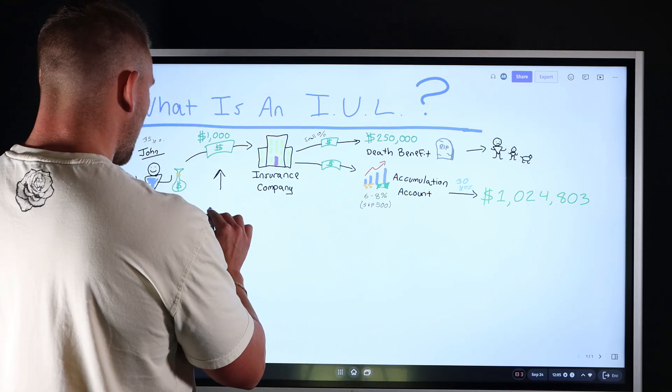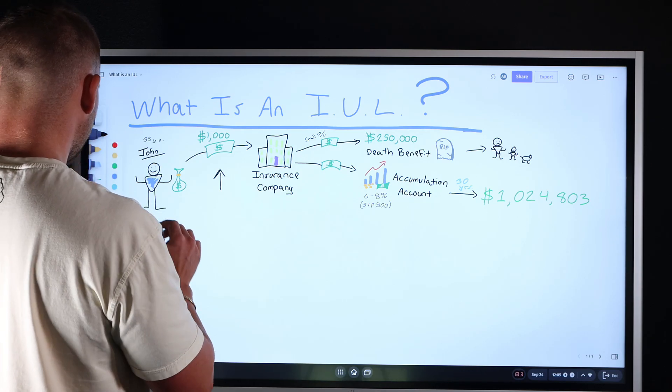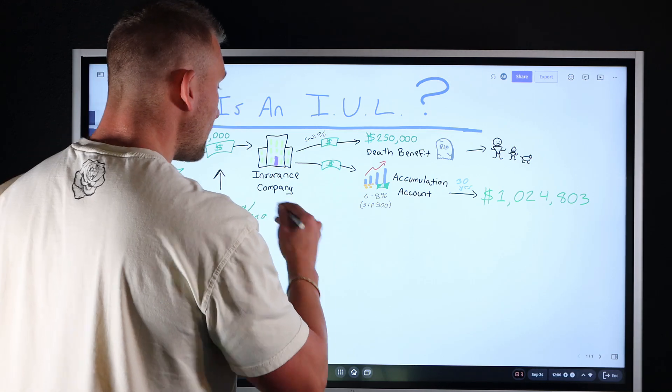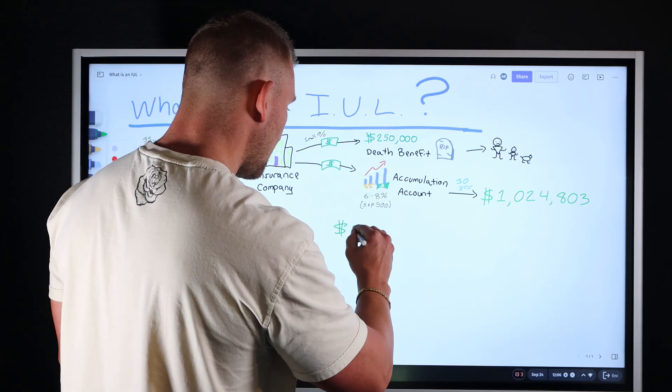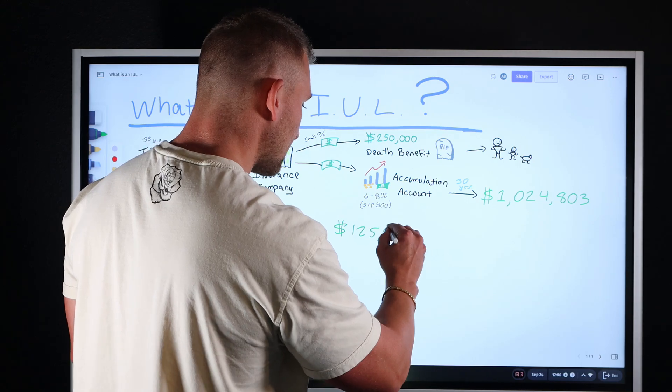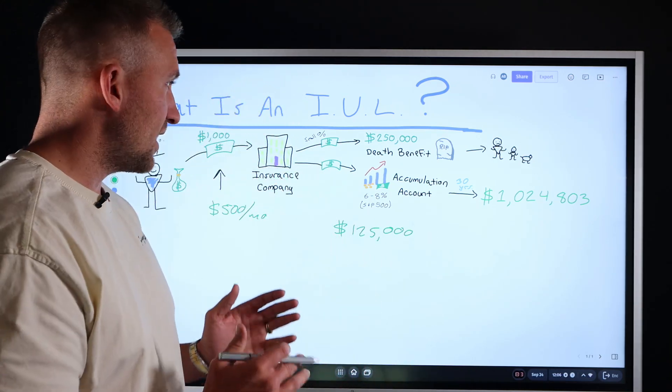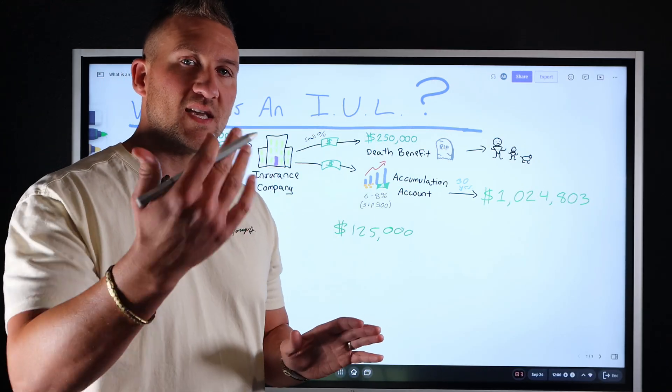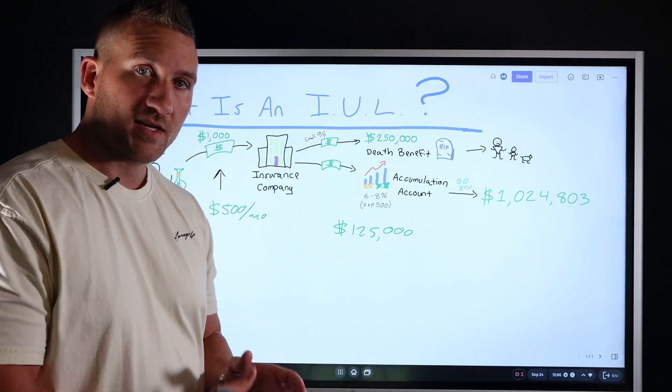Let's say John wanted to save 500 bucks per month. Let me change this over here. And let's say he wants to save 500 bucks per month. Well, in that scenario, the required death benefit is only going to be roughly $125,000. Okay. So what you want to do when we're setting these policies up is we want to make sure it is maximum funded, minimum death benefit based off of what you can comfortably save each and every month consistently.